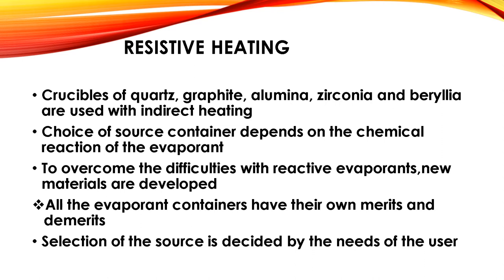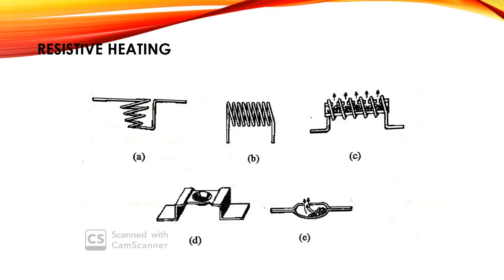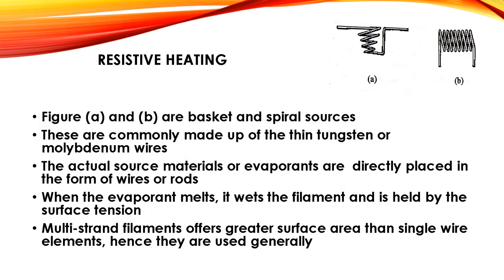The selection of the source is decided by the needs of the user. There are mainly five types, which we will discuss separately. Figures A and B represent the basket and spiral sources respectively. These are commonly made of thin tungsten or molybdenum wires. The actual source materials or evaporants are directly placed in the form of wires or rods. When the evaporant melts, it wets the filament and is held by surface tension. Multi-strand filaments offer greater surface area than single wire elements, hence they are generally used.